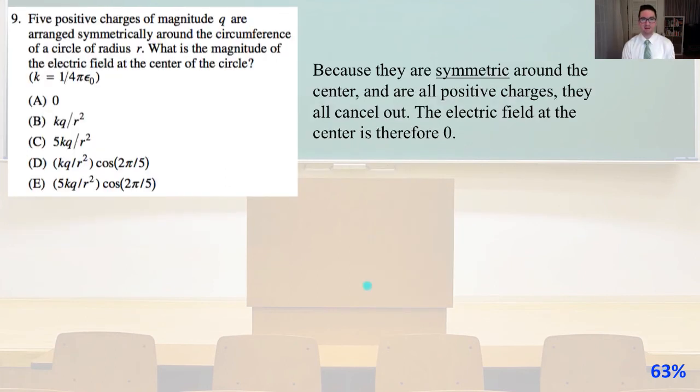Number nine. Five positive charges of magnitude q are arranged symmetrically around the circumference of a circle of radius r. What is the magnitude of the electric field at the center of the circle? Because they are symmetric around the center and they're all positive charges, they all cancel out. Therefore, the electric field at the center is zero. Answer A.